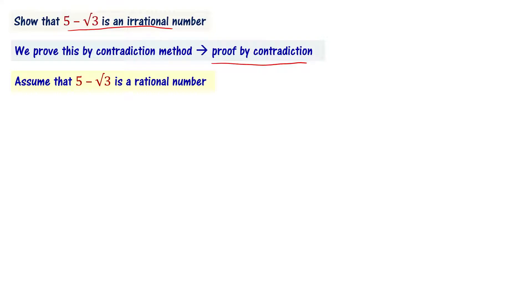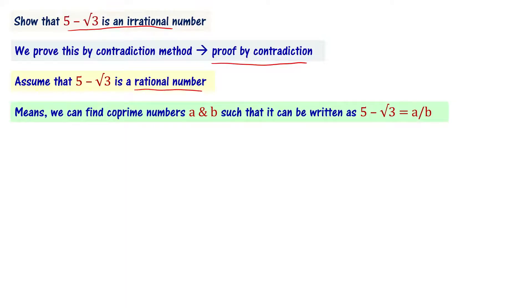Since we assumed it is rational, by the definition of a rational number, it can be written as a ratio of two integers a and b. So 5 minus root 3 equals a divided by b, where a and b are co-prime numbers — meaning they have only the number 1 as their common factor.